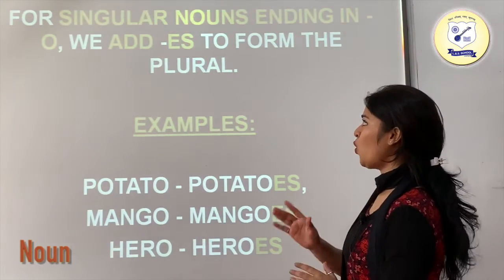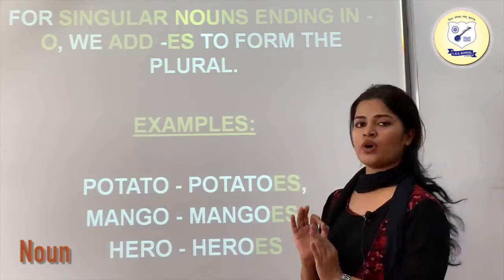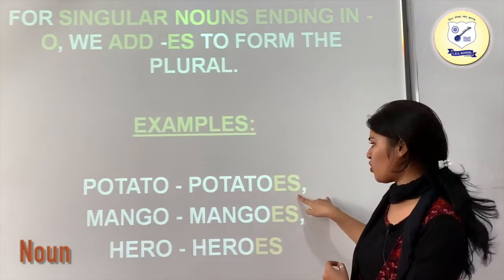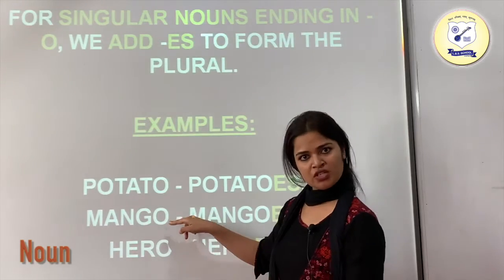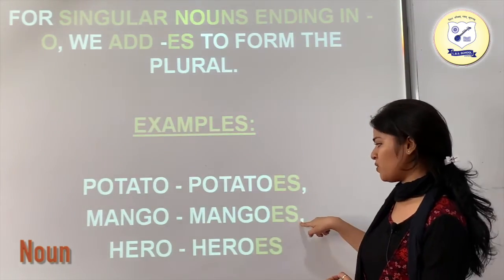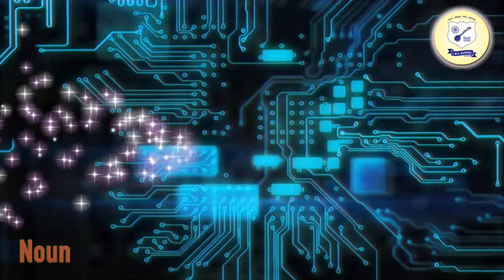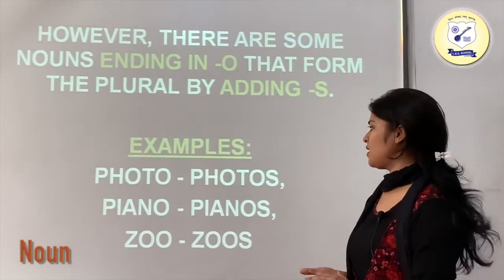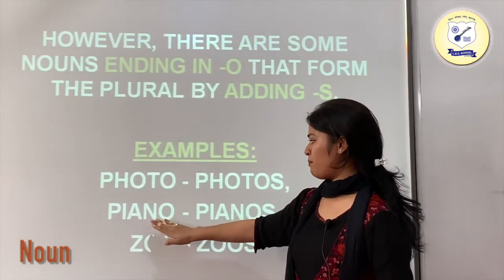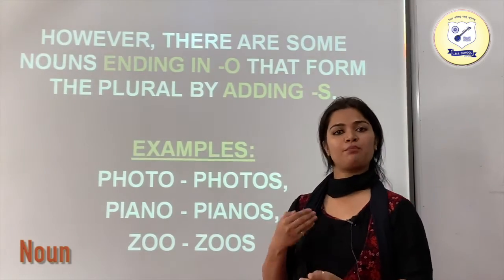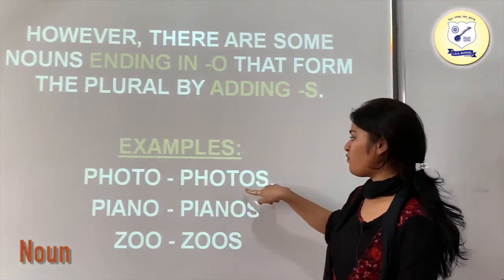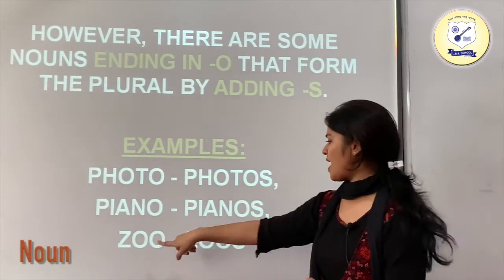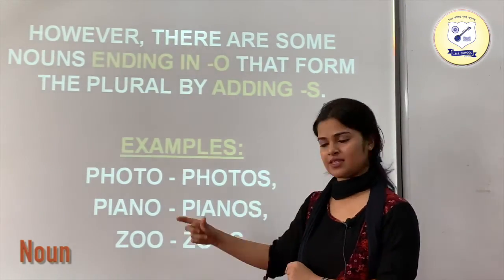For a singular noun ending in 'o', we add 'es' to form the plural. For example, potato ends with o, so it becomes potatoes. Mango becomes mangoes. Hero becomes heroes. However, there are some nouns ending in 'o' that form the plural by just adding 's'. For example: photo becomes photos, piano becomes pianos, and zoo becomes zoos — not zooes.